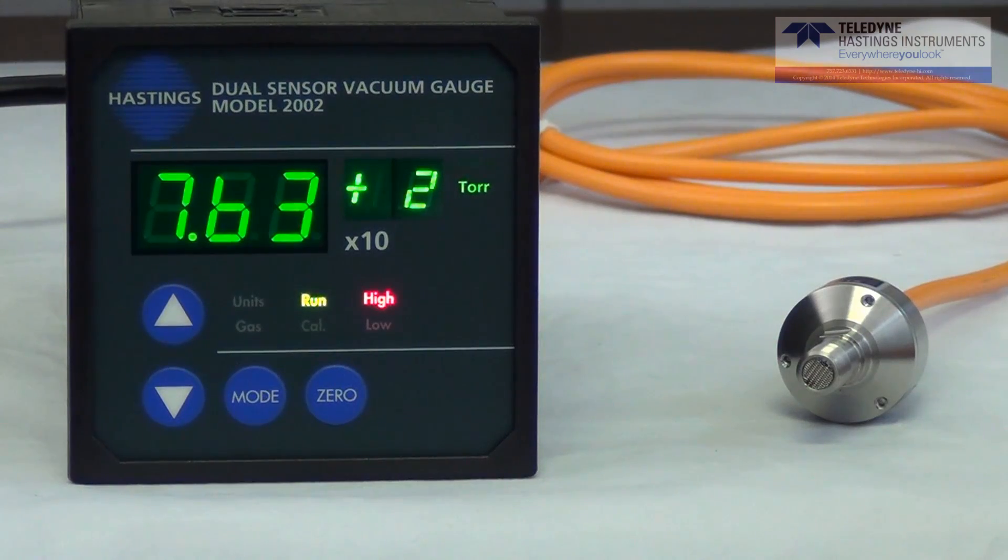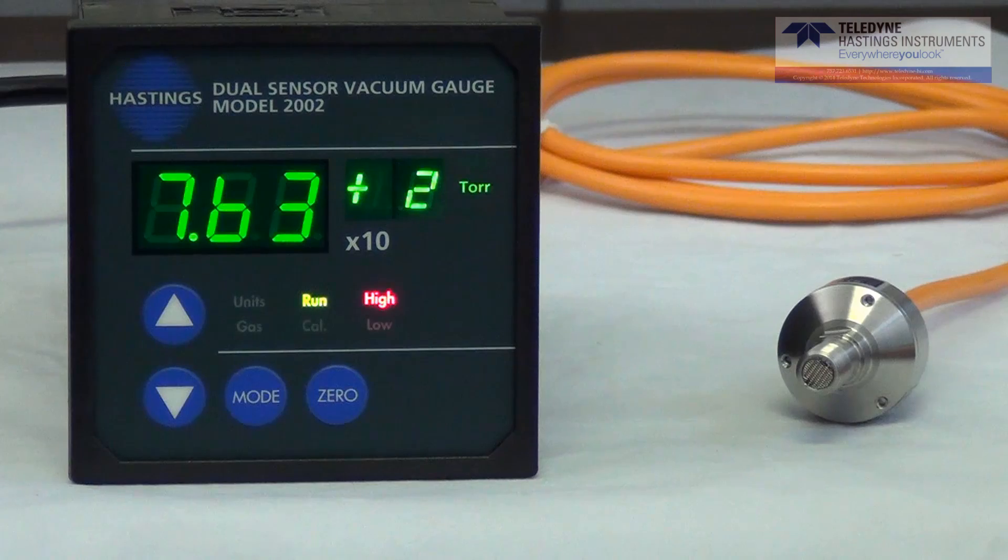One other cool feature about the 2002 is that the microprocessor uses the output from the lower pressure thermal sensor to automatically update the zero of the piezoresistive sensor. This gives the user the added benefit of improved accuracy, especially when venting the vacuum system.